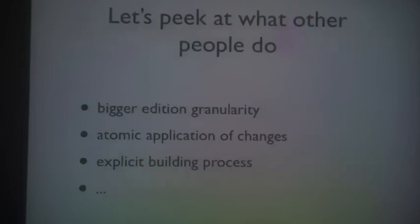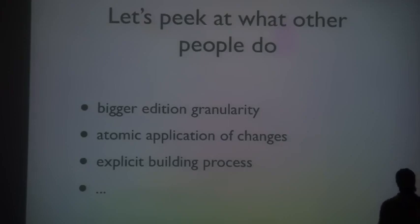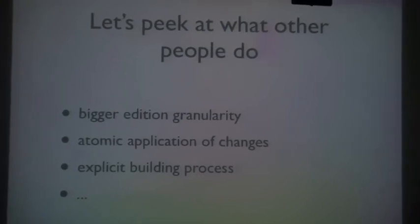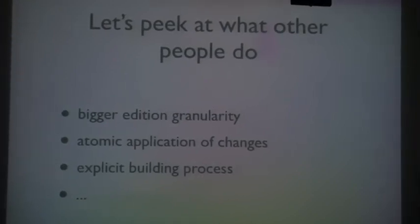That leads us to see how other people can survive — let's look around and see how other systems behave. If we take a C program, we have source code, and a compiler that compiles that source code, then we link the compiled objects and get an executable. The main benefit of that approach is that we can apply a lot of changes atomically to a system, one at a time. We don't have to apply them step by step as we do in Smalltalk. We have atomic changes and an explicit building process — we know how our system is built from scratch and we can reproduce it.